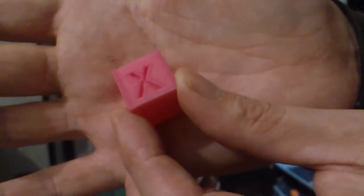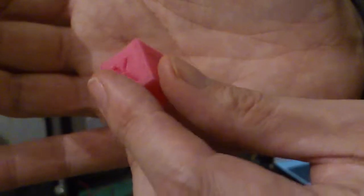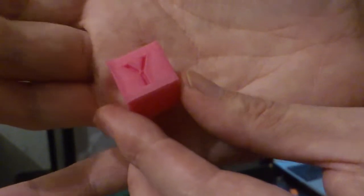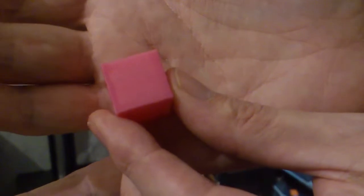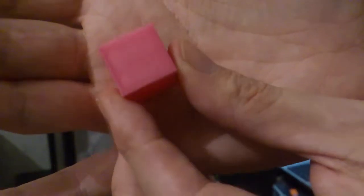The layer lines are pretty good on all sides. There's no separation. It handled it quite well for the first tiny print.